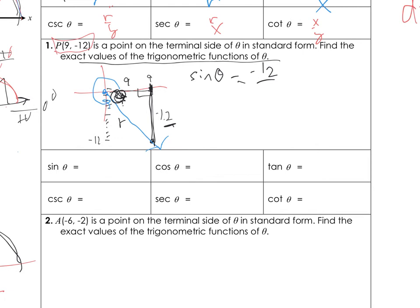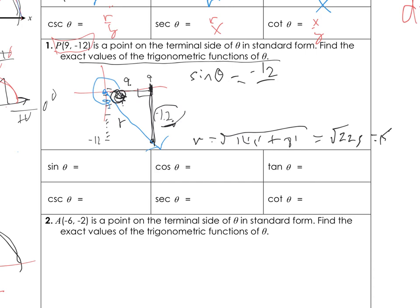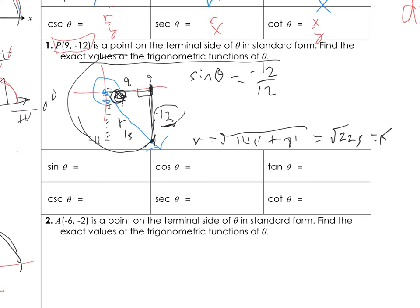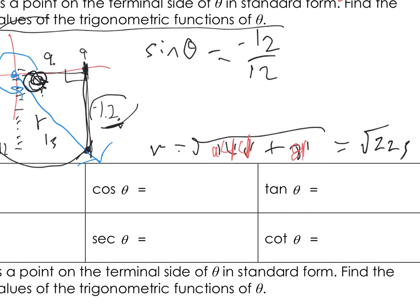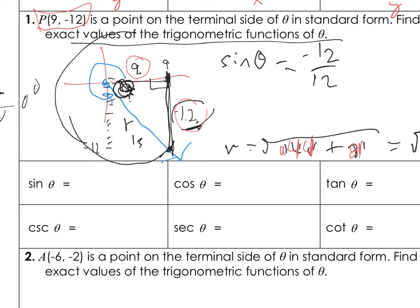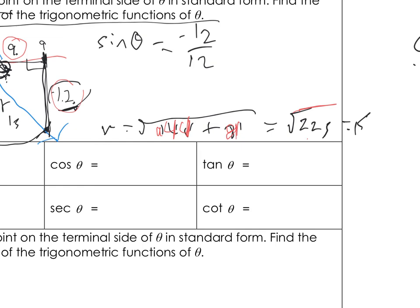R equals the square root of negative 12 squared — that's 144 — plus 9 squared, which is 81. Adding those: 144 plus 81 is 225. Square root of 225 is 15. So my radius is 15. Sine of theta is negative 12 over 15.